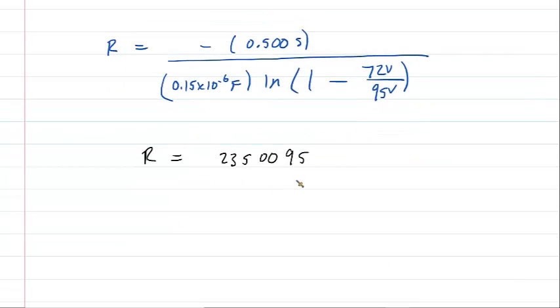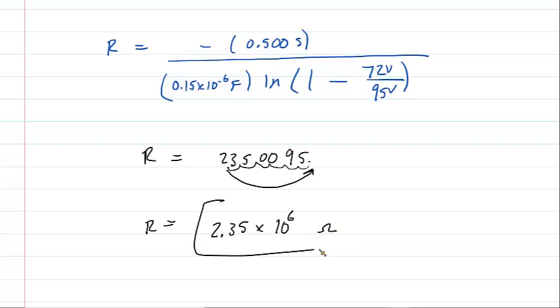And that kind of is a large number. So we might want to express that in scientific notation. So we can move this decimal 1, 2, 3, 4, 5, 6 places to make 2.35. But then we'd have to move it 6 places back to get it to its original position. So that's times 10 to the power of positive 6. This will be in ohms, the standard unit of resistance.